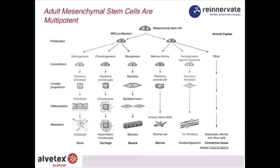MSCs are multipotent and can give rise to a range of mesenchymal tissue derivatives, including bone, cartilage, and connective tissue. I will show you data today regarding the differentiation of mesenchymal stem cells in Alvitex and the formation of bone and adipocytes — fat differentiation.